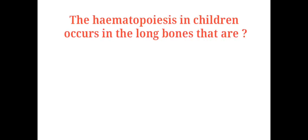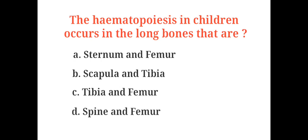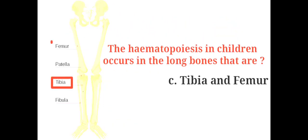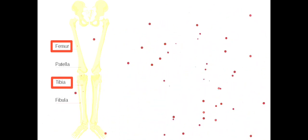The hematopoiesis in children occurs in the long bones: A. Sternum and femur, B. Scapula and tibia, C. Tibia and femur, D. Spine and femur. The answer is C. Tibia and femur. The process of formation of blood cells in the body is known as hematopoiesis, especially in the bone marrow.